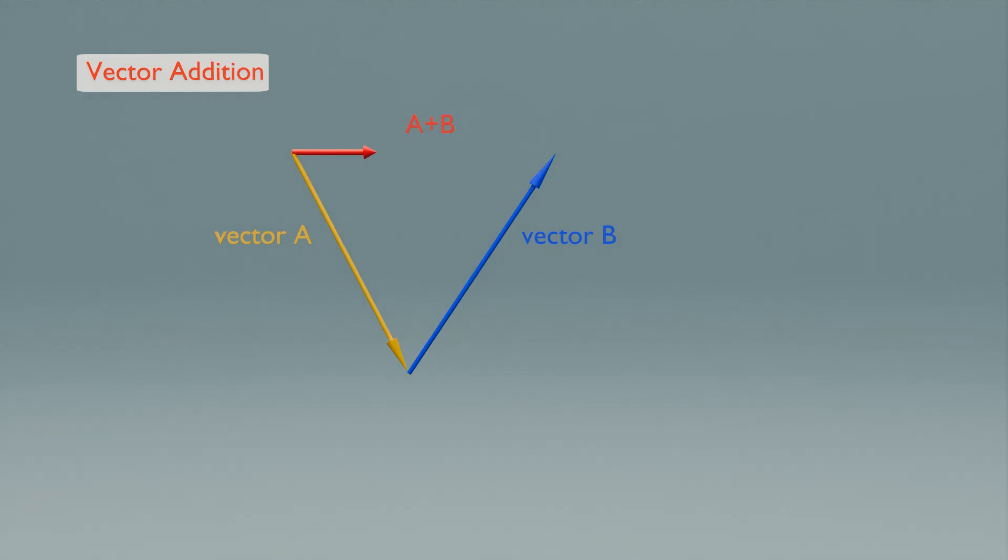When we add these two vectors together, we get a resultant vector, which we call vector A plus B. Notice that the directions of the vectors and their angles determine the direction and magnitude of the resultant vector.